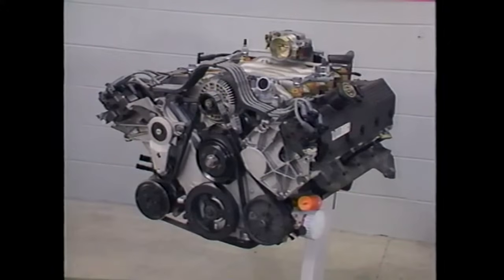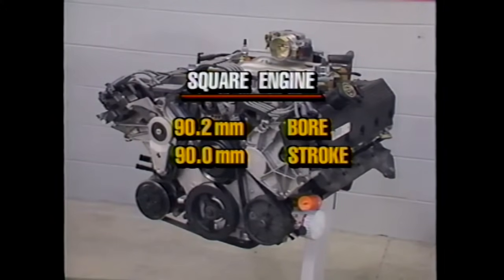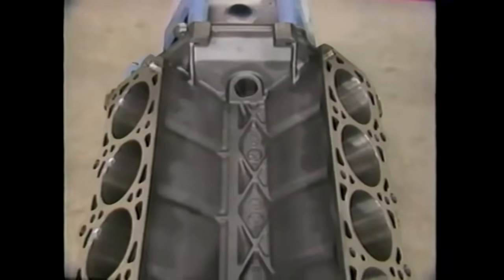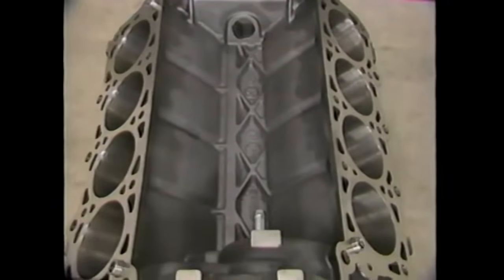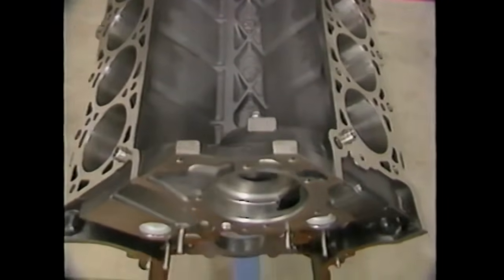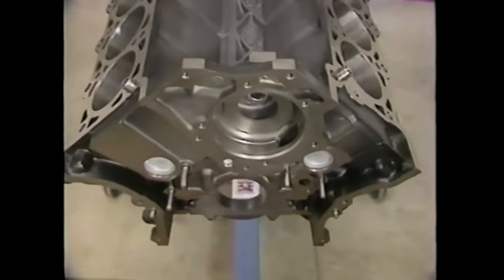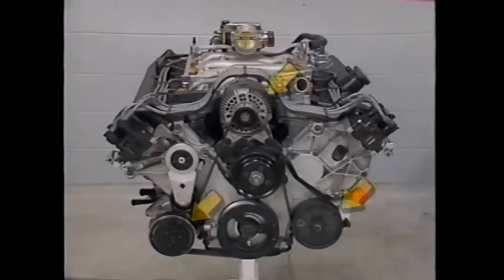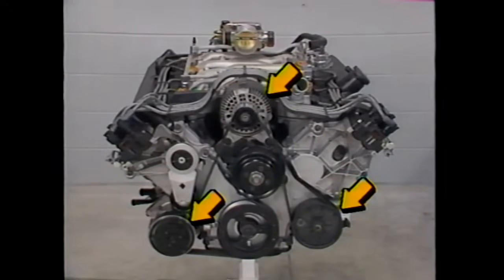The 4.6 liter engine is called a square engine due to the 90.2 millimeter bore and 90 millimeter stroke. The engine features a newly designed cast iron 90 degree V8 engine block with dedicated positions for accessory component mounting, such as the alternator, AC compressor, and power steering pump. This design eliminates the need for additional brackets and makes the engine more compact, lighter weight, and improves noise and vibration concerns.